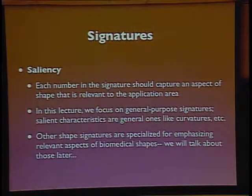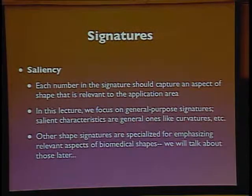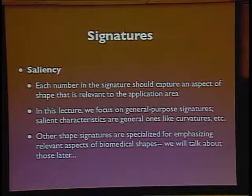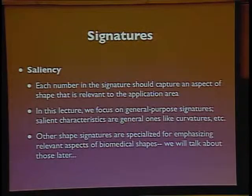We're going to focus on general-purpose signatures, not ones specific to any particular domain like fruit. There are other shape signatures that are more specialized and don't make much sense unless applied to particular kinds of shapes. The most prominent example is biomedical shapes — shapes extracted not from surface data but from 3D medical imaging data — and we'll talk about those later in about two or three weeks.